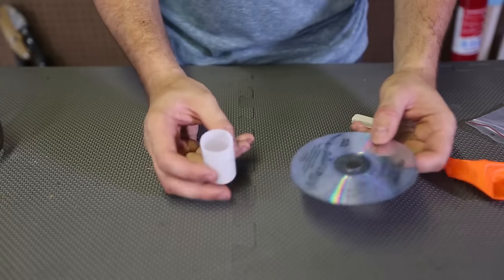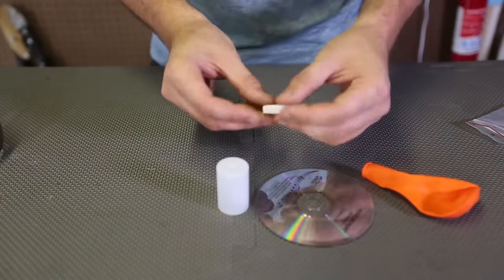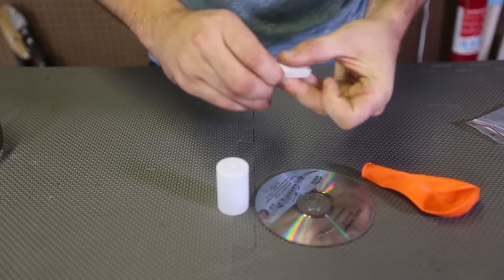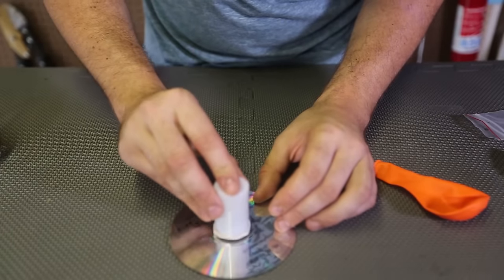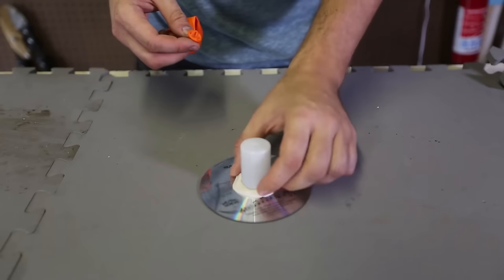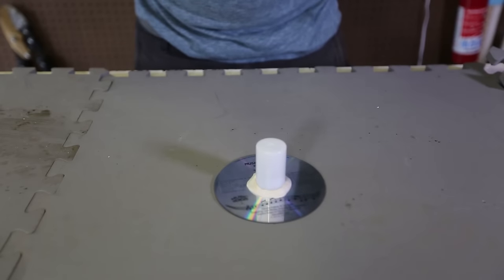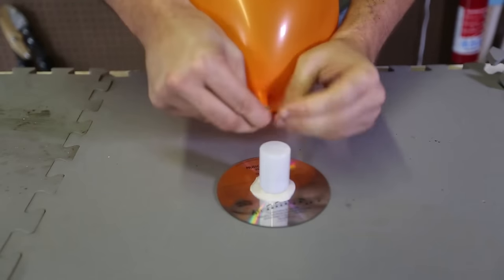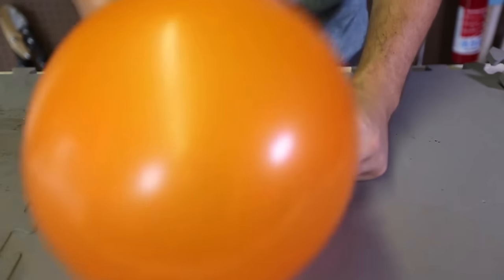For this science experiment, we will need CD, film canister, balloon, and some kind of glue. This one is a glue putty. This science kit is pretty cool. And then, we're going to stick it on the bottom right here. Now, we're going to need some kind of smooth surface, and then we're going to blow up the balloon. Just like that.